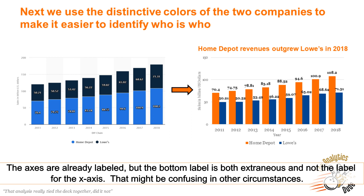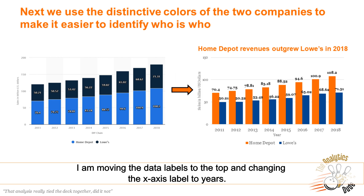The axes are already labeled, though the bottom label is both extraneous and not the label for the x-axis, which could be confusing in other circumstances. I'm moving the data labels to the top and changing the x-axis label to 'years.'